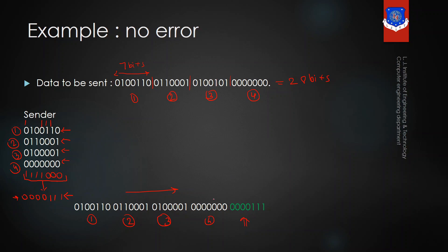Notice the size of the actual data versus the data which is in transmission right now. The size of the actual data was 28 bits, but right now the data in transmission has increased to 35 bits. The receiver will receive this stream of data, divide it into segments, and arrange the segments in the same manner as the sender did — four data segments and one checksum segment.